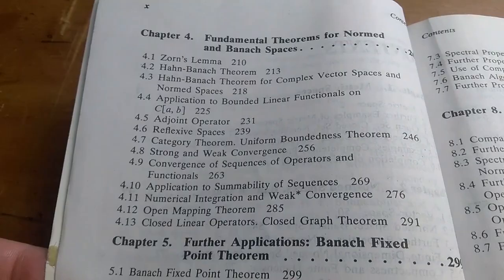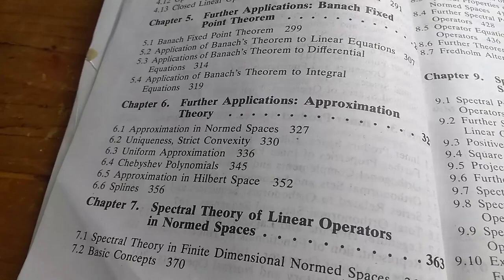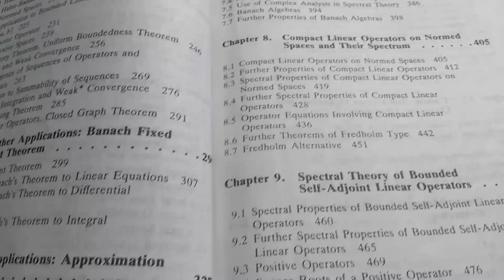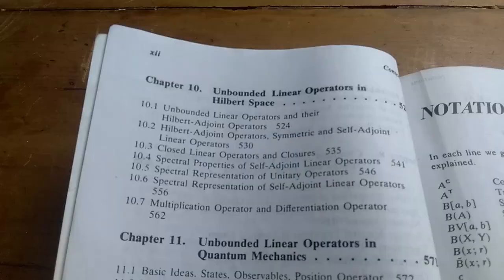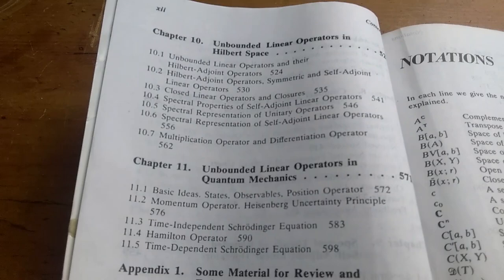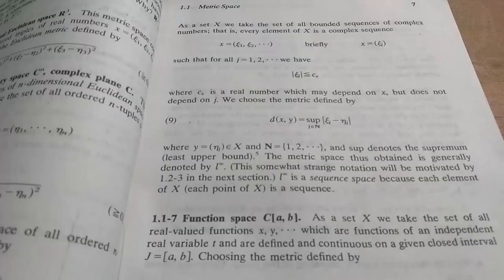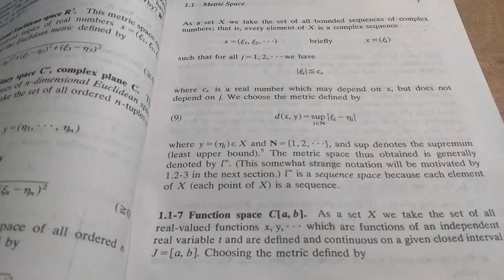Chapter 4 is on the fundamental theorems for Normed and Banach spaces. Then he goes on to fixed point, the Banach fixed point theorem. Some approximation theory. Spectral theory of linear operators. Compact linear operators on Normed spaces. And then some spectral theory. Unbounded linear operators in Hilbert space.